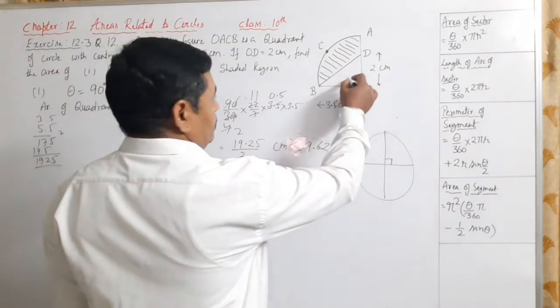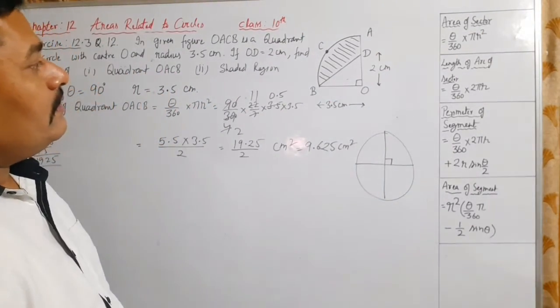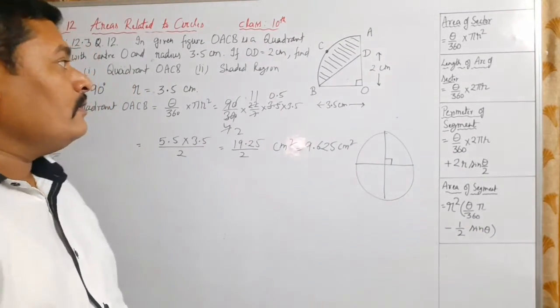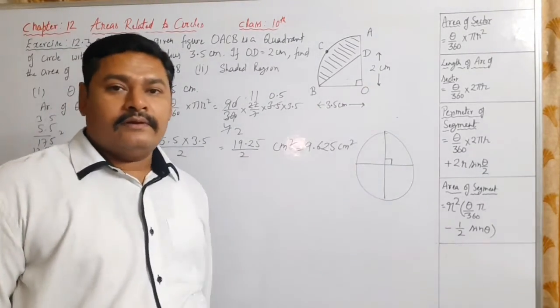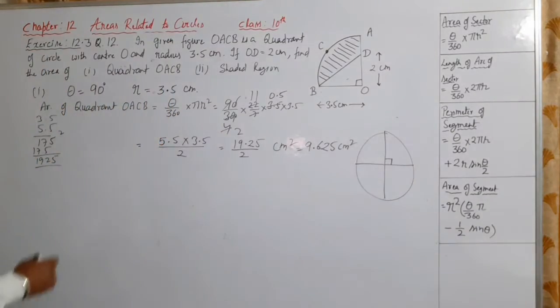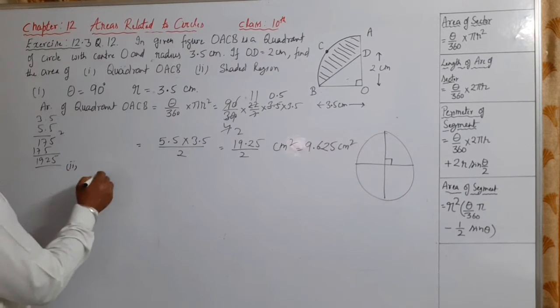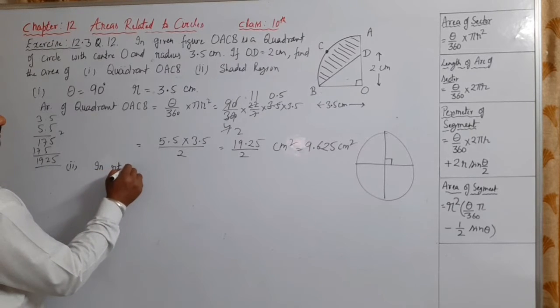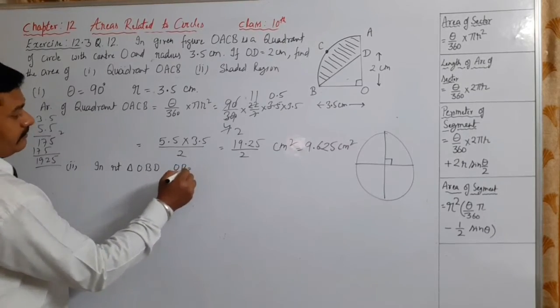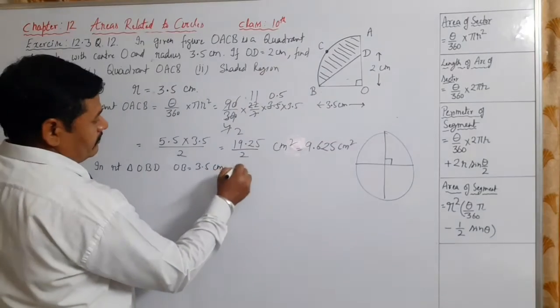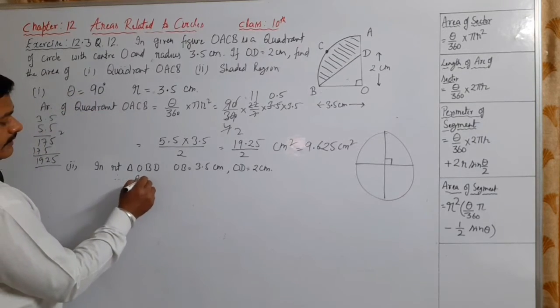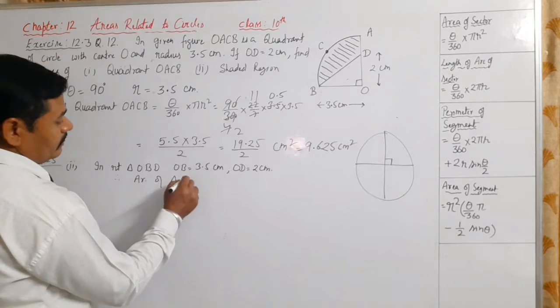How do we find the area of triangle O, B, D? Since the central angle is 90 degrees, triangle O, B, D is a right-angled triangle. For a right-angled triangle, we use base and height, so its area is half into base into height.